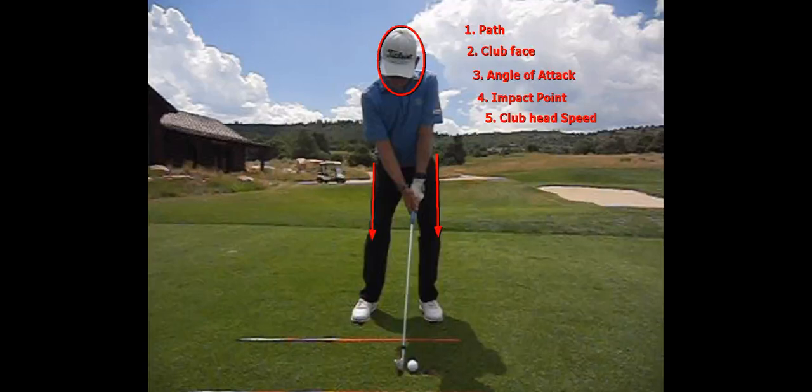I want to go over the five things that the golf club does that makes the golf ball go where it goes. Number one is the path of the club — is it traveling to the right, straight, or left of your target? Number two, club face — is the club face to the right, straight, or left of your target? Number three, angle of attack — is the club head coming down, level, or up?